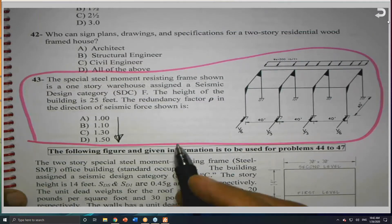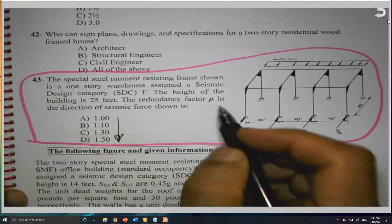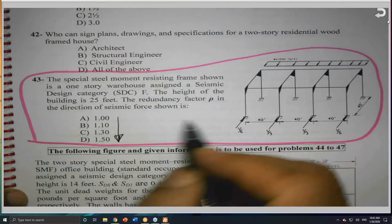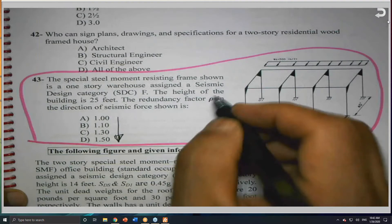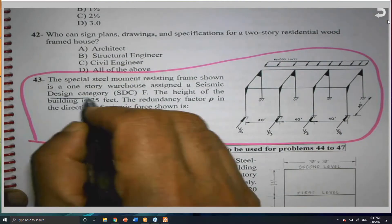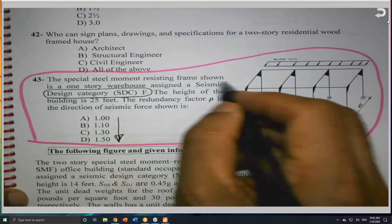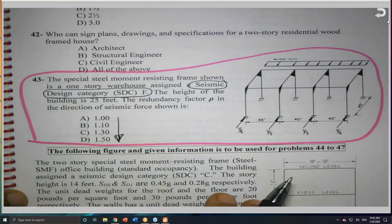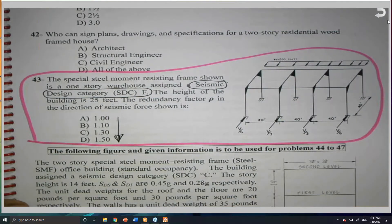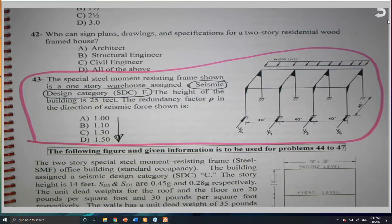The first thing that when you read a problem about redundancy, first of all, he gave you the seismic category F. The seismic design category F is one of the serious seismic design categories, which is the worst one, in fact, as I mentioned before. This is the first thing that I will pay attention to, the seismic category.